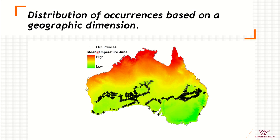Using mean temperature in June across Australia as an example environmental variable, you may have many many occurrence points in geographic space, but in environmental space all those points might represent exactly the same temperature value — say 26 degrees Celsius. So even abundant geographic records may represent only one value in environmental space, meaning richness of points alone is not sufficient.